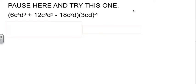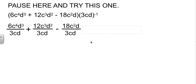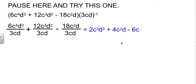I'm going to ask you to take a second here and try this problem out, then come back and we will check your results. Since this is a negative power and it's just a single term, I'm going to put it underneath each one, and then simplify. The answer is 2C³D² plus 4C²D minus 6C.